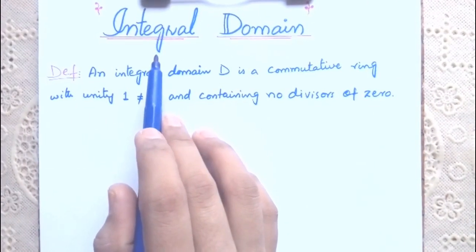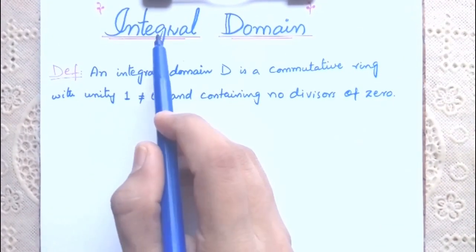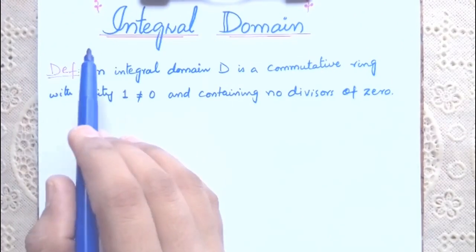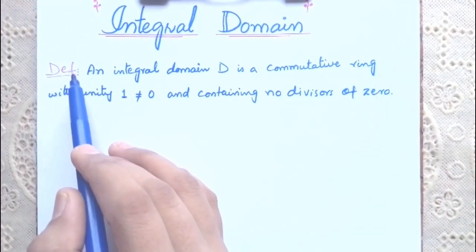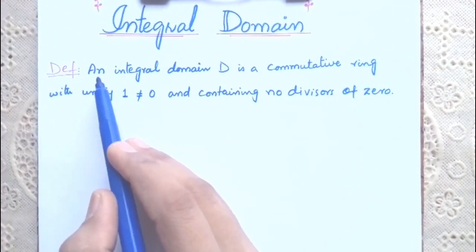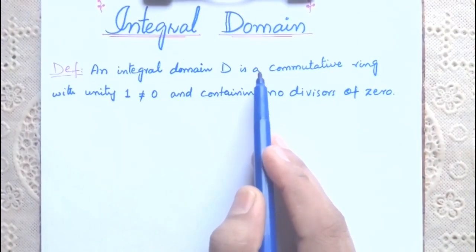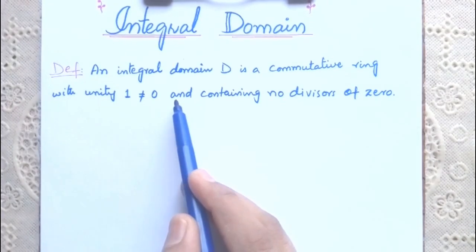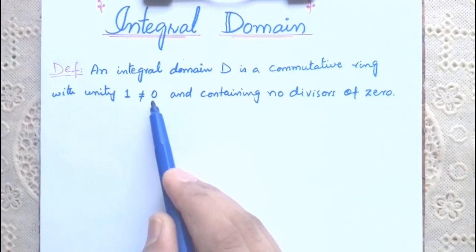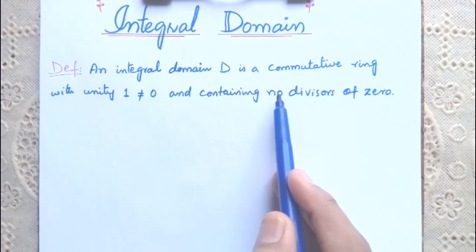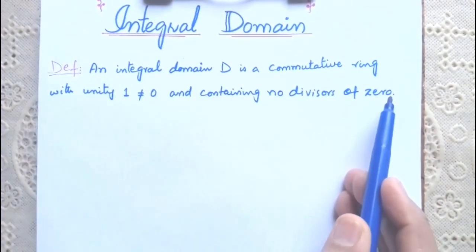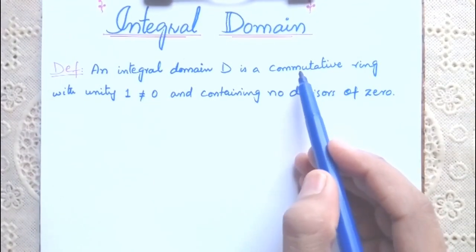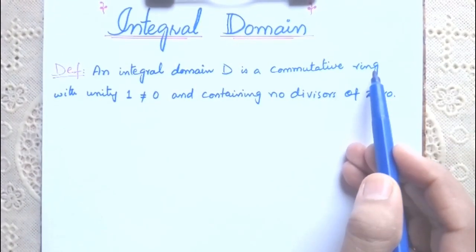Welcome to the Formula Foundation. An integral domain D is a commutative ring with unity not equal to zero and containing no divisors of zero. You are familiar with commutative ring —